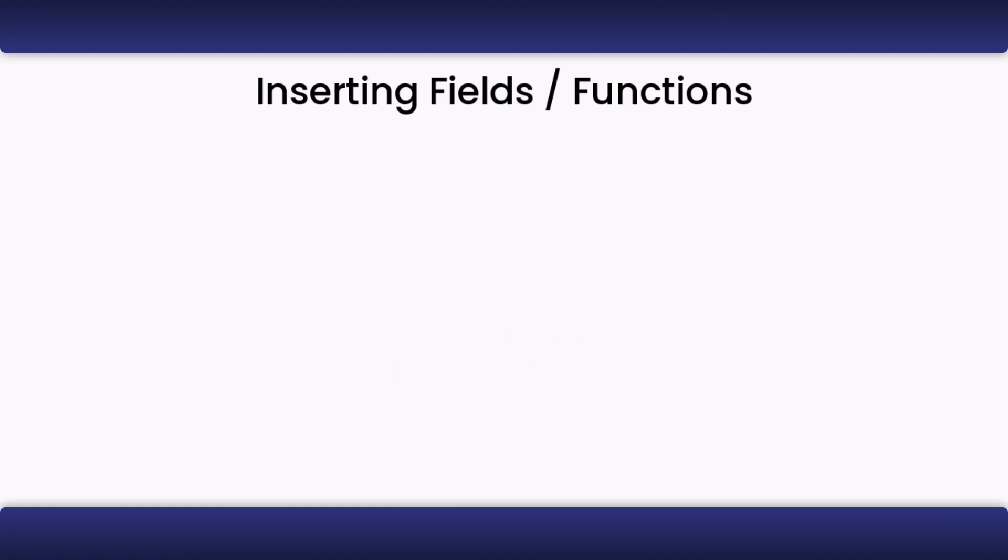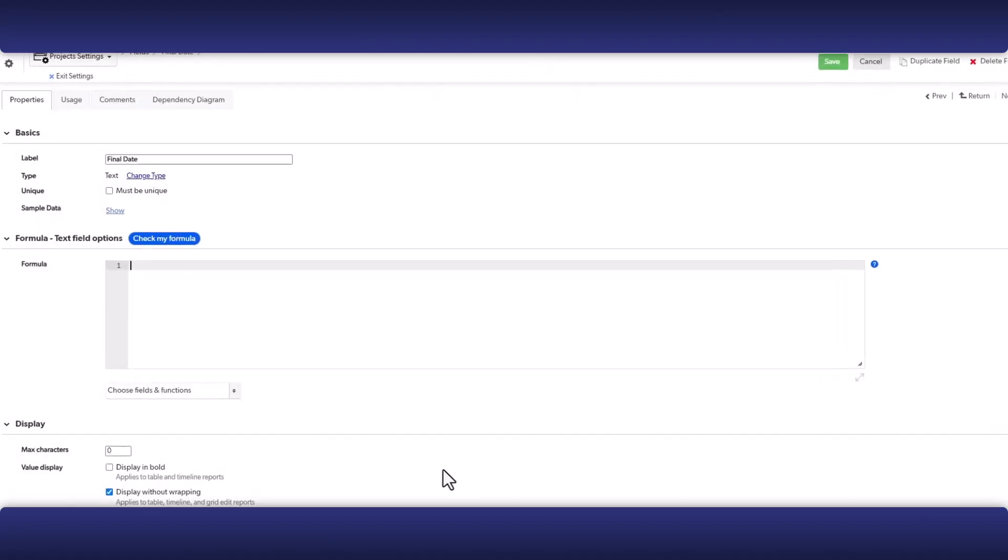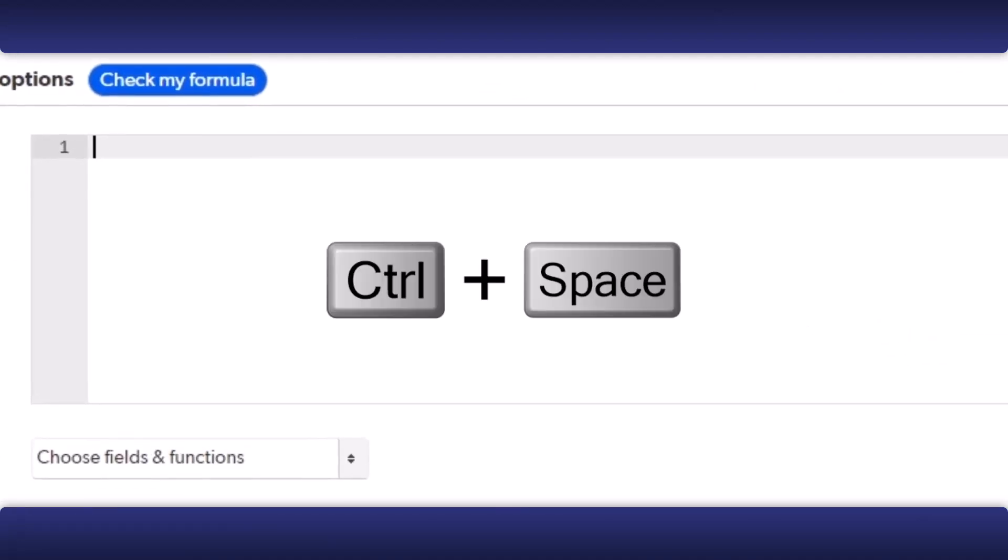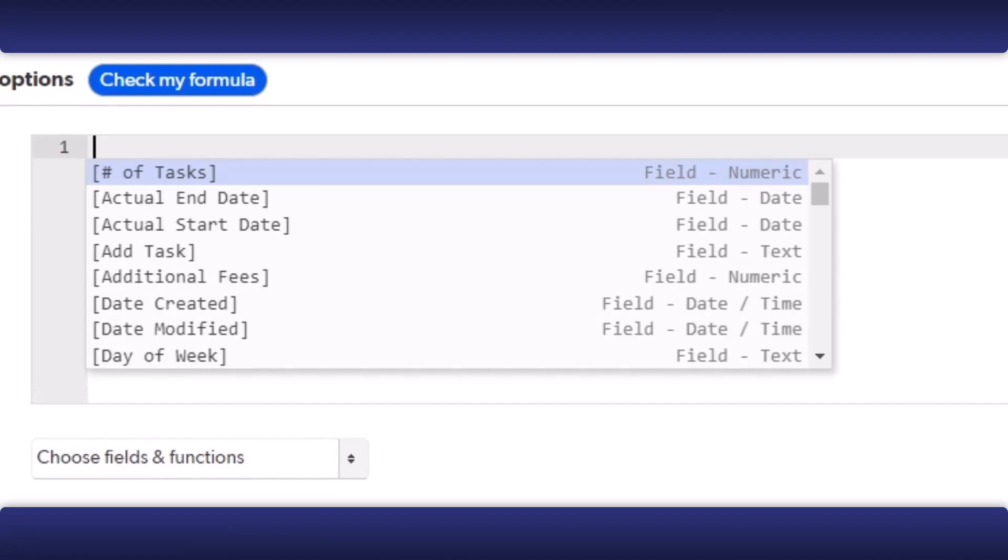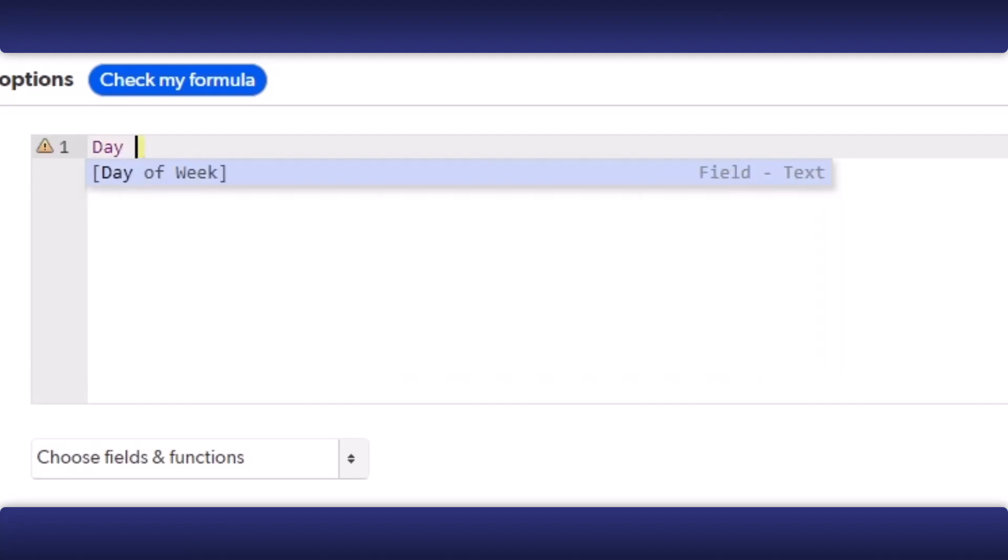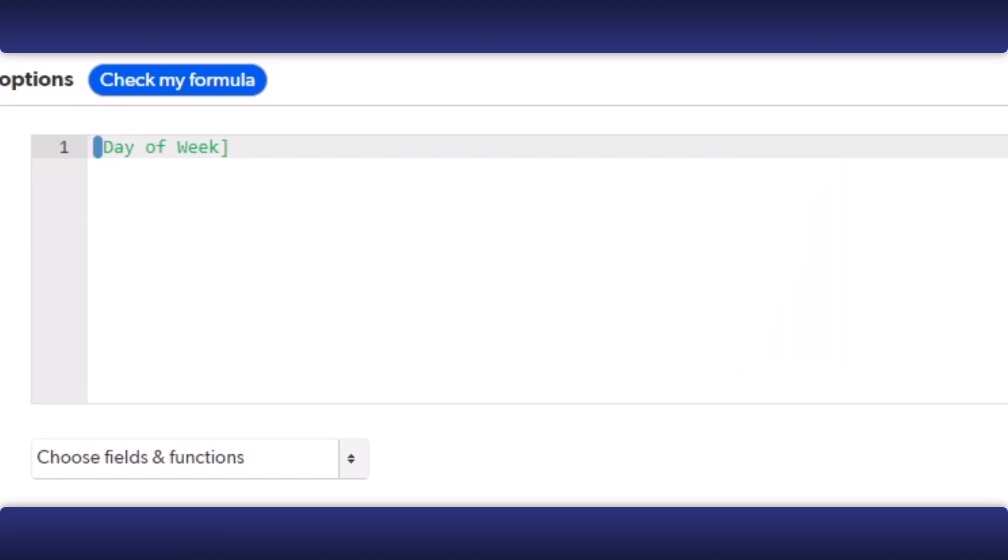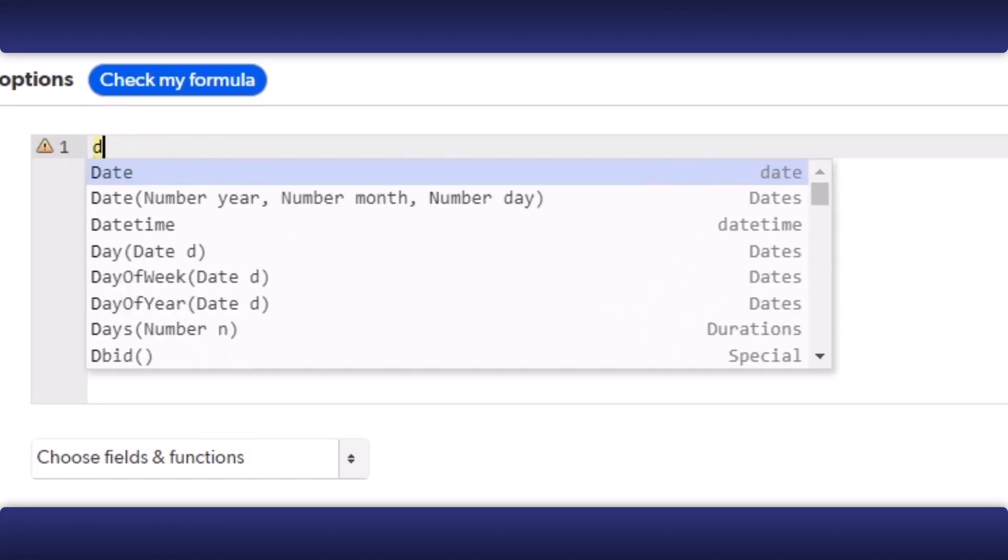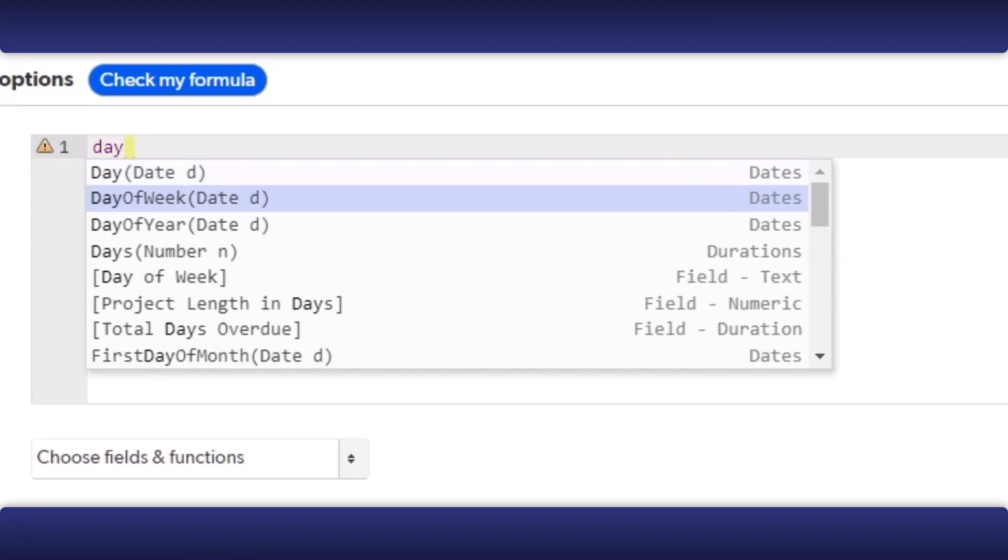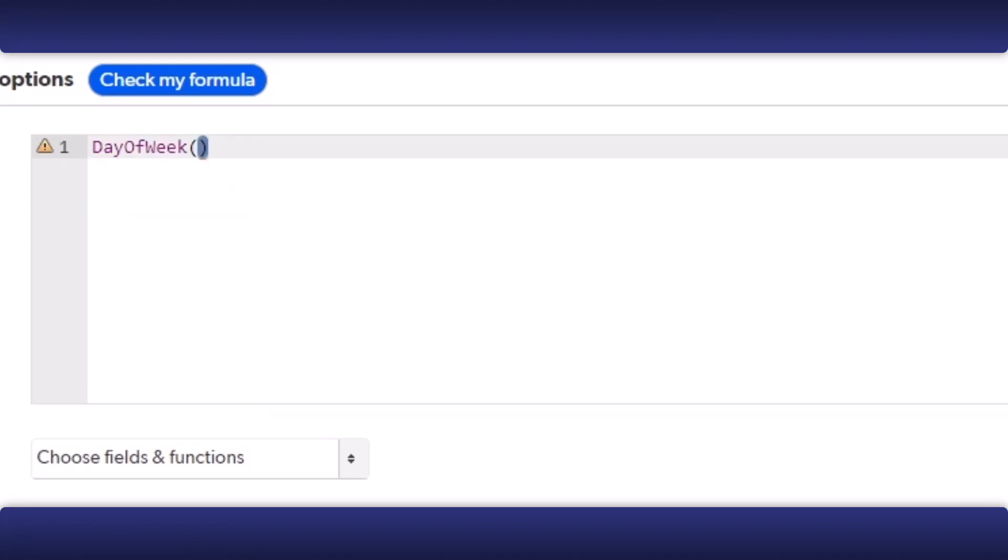Second, you can use the context menu. To do this, you will have to use the shortcut Control Space. If this doesn't work, type a space first. Now you can start to type in a field's name or function and it will filter the context list. You can choose a field or function from the list with your arrow keys and select a field by pressing Enter. If you choose a function, it will output placeholder text for the arguments in the function. You will have to delete them.